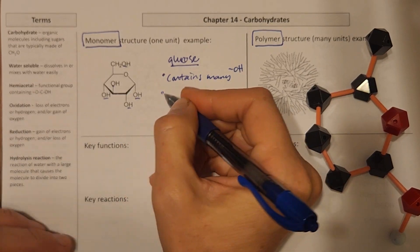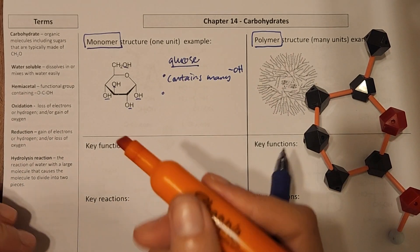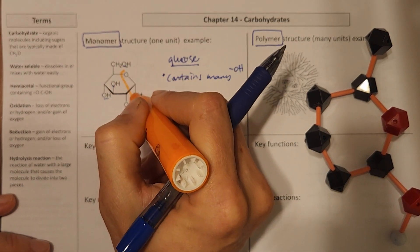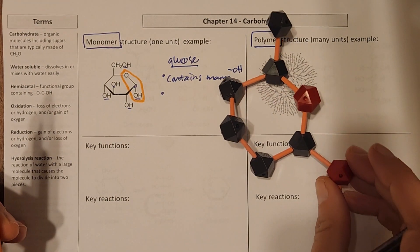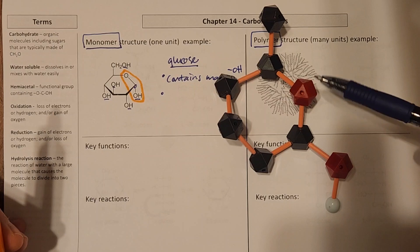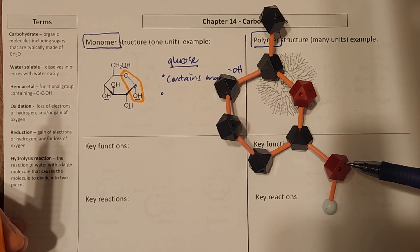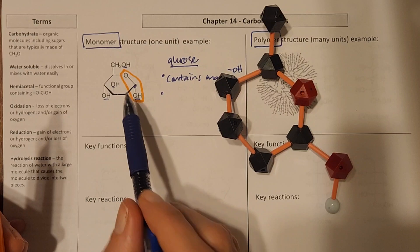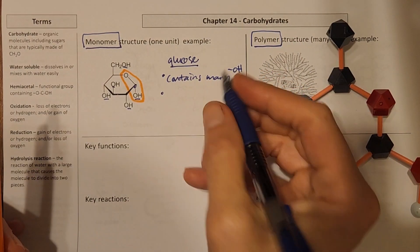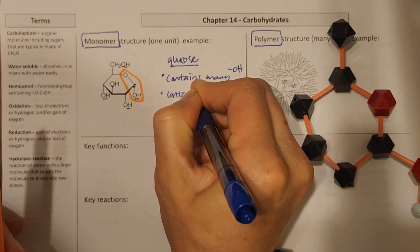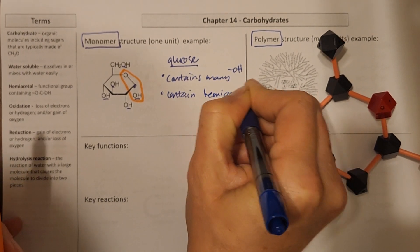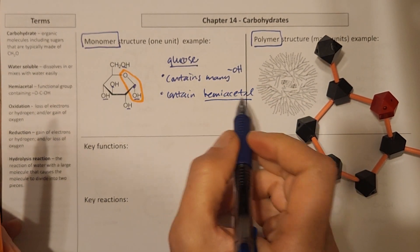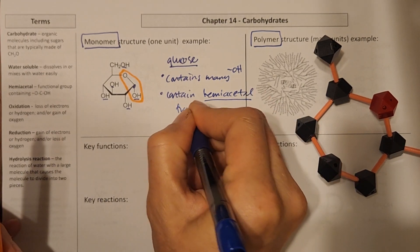It also has a new functional group for us. So the new functional group is going to be this O, carbon, OH. And if I can see that on my model, the red is oxygen. So there's an oxygen in the ring, and then a carbon, and then an OH. So that's what I'm looking at here. So we say that our monosaccharides contain a functional group called a hemiacetal or a half-acetal functional group.